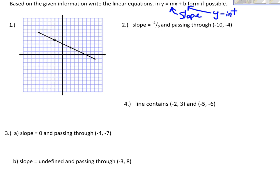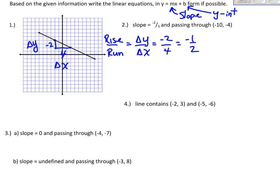Looking at the first problem, the line goes down to the right, so right away I know my slope is going to be negative. I'll draw in a slope triangle going from one point to the next. It goes down 2 units, so my delta y is negative 2, and my delta x — my change left to right — is 4 units. So my rise over run, delta y over delta x, is negative 2 over 4, which reduces to negative 1/2.